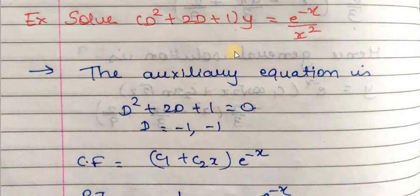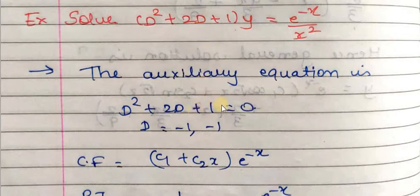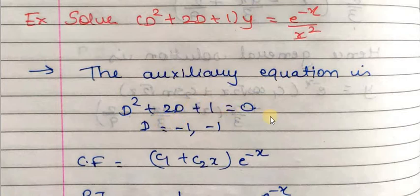CF is the complementary function and PI is the particular integral. To find CF, we equate f(D) to zero to get the auxiliary equation: D² + 2D + 1 = 0. Remembering the formula a² + 2ab + b² = (a+b)², here a is D and b is 1, so it becomes (D+1)² = 0.